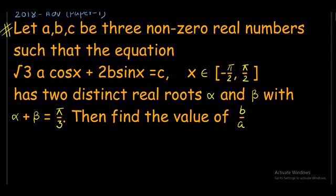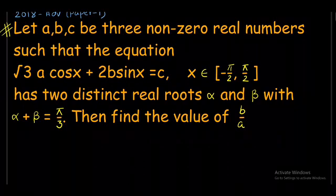The question says: Let a, b, c be three non-zero real numbers such that the equation √3a cos x + 2b sin x = c, where x belongs to [-π/2, π/2]